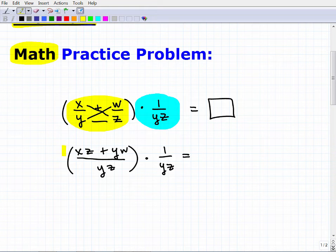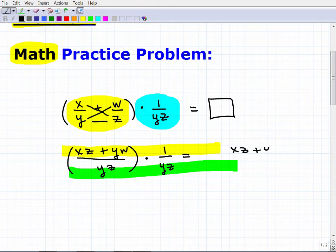Now I'm going to multiply by one over yz. When I do this, I'm going to multiply the numerators and I'm going to multiply the denominators. One times xz plus yw—one times anything is just itself—so this is just going to be xz plus yw over y squared times z squared, which is yz parentheses squared.